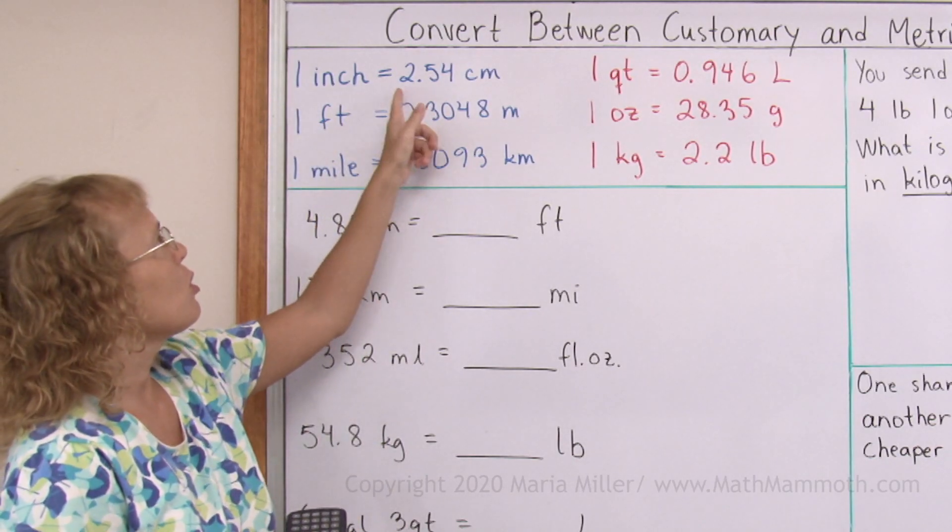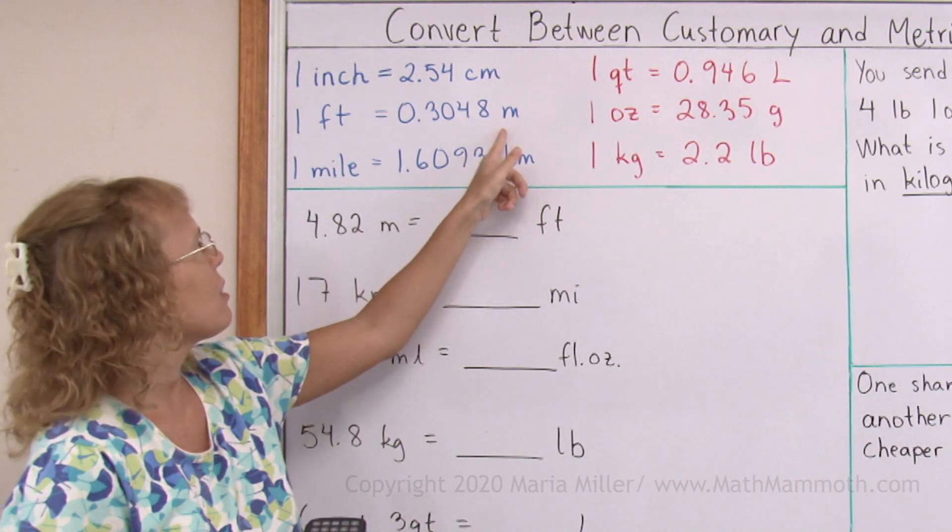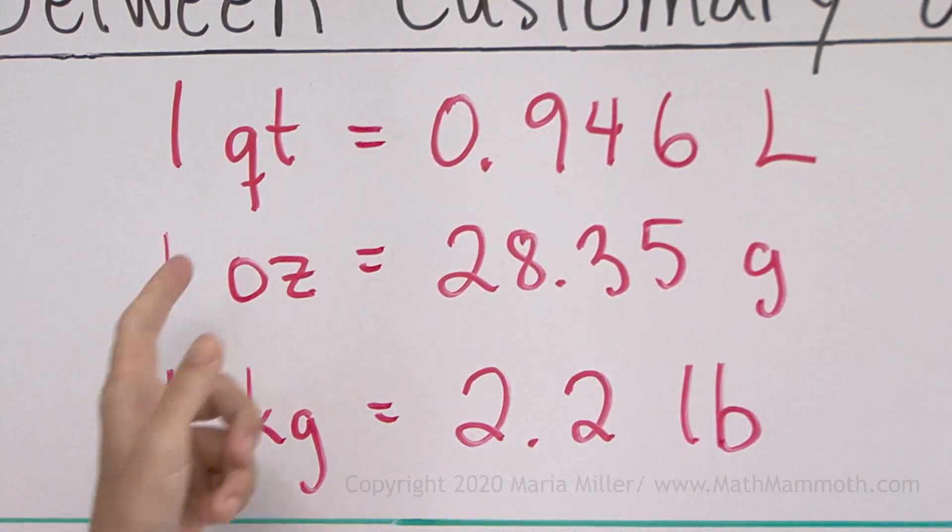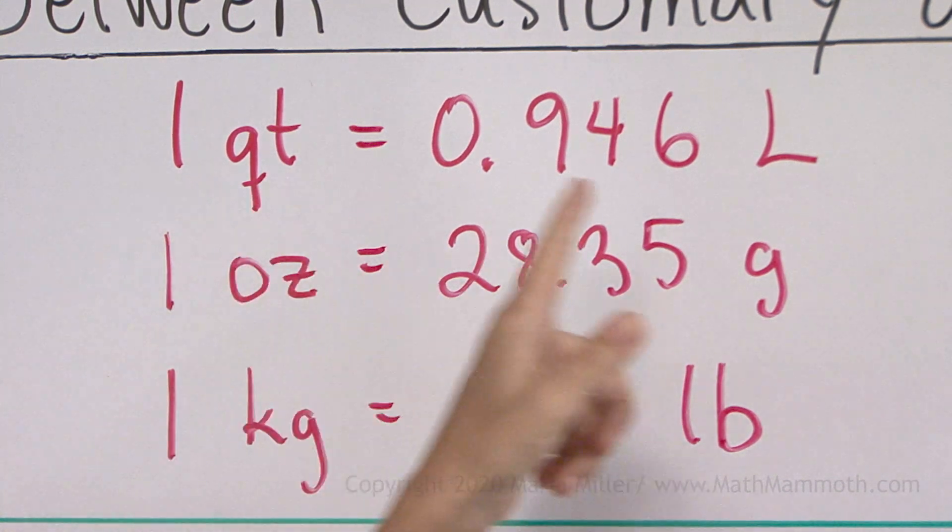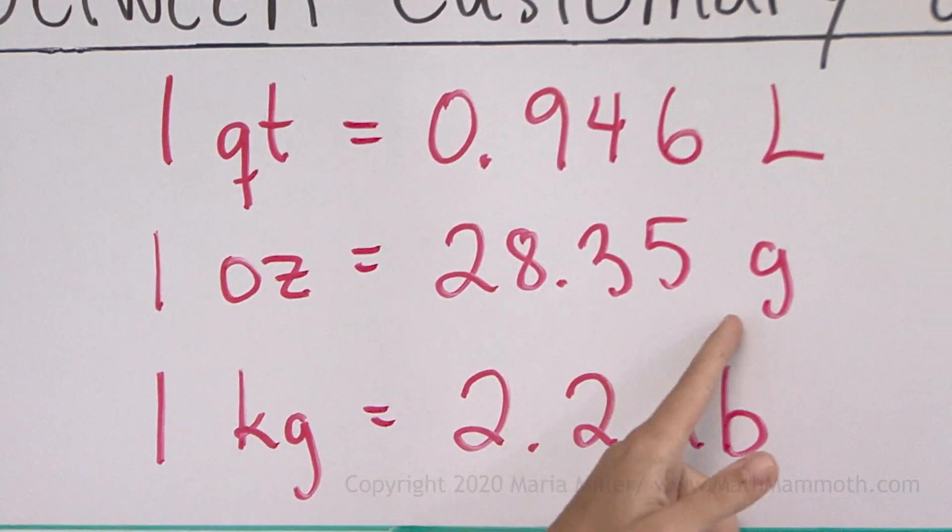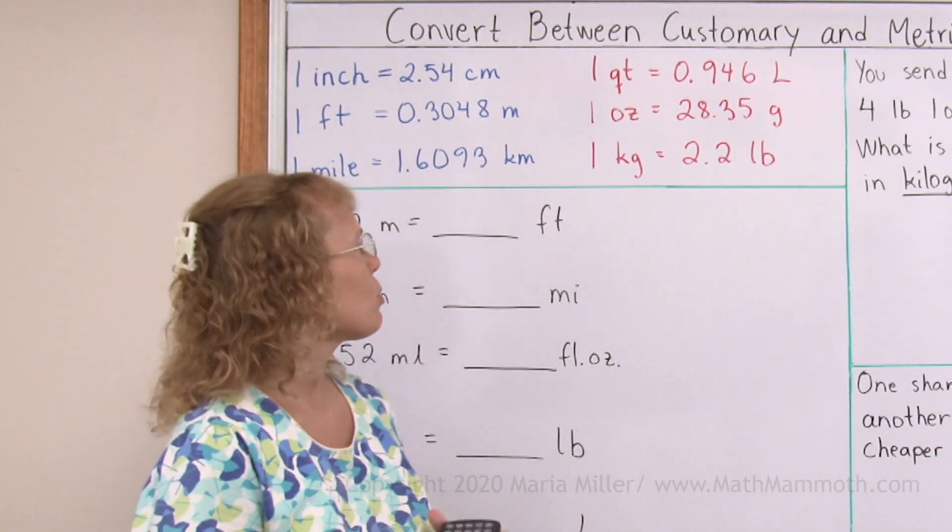Such as one inch is 2.54 centimeters, and there's one foot into meters, and one mile into kilometers. And then one quart into liters, and then one ounce is this many grams. Then one kilogram, 2.2 pounds. So we're going to use those.